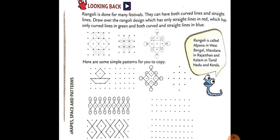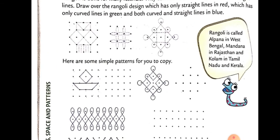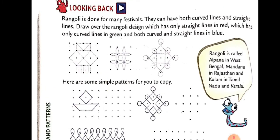First of all, looking back at second standard. Rangoli is done for many festivals; they can have both curved lines and straight lines. Draw over the rangoli design which has only straight lines in red, only curved lines in green, and both curved and straight lines in blue. Straight lines: red color; curved lines: green color; both: blue color.